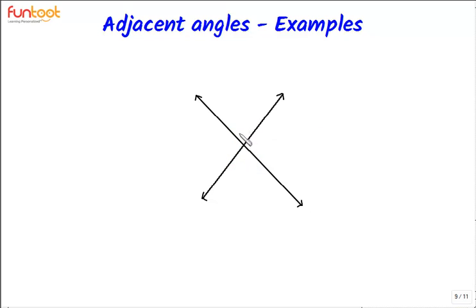Let's see which angles are not adjacent. This angle is not adjacent to this angle. Even though they have a common vertex and they do not overlap, they don't have a common arm. For the same reason, this angle is not adjacent to this angle.